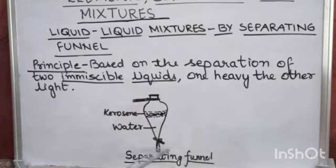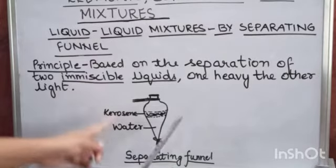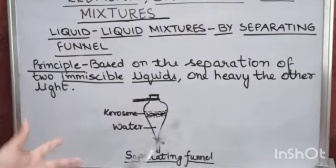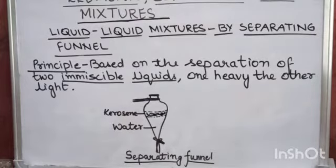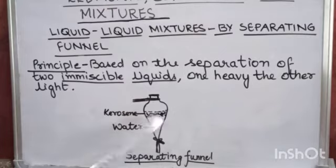Here there is a separating funnel used in this process. The separating funnel is pear-shaped, or you can say a cylindrical bulb, with a stop cork fitted at the end. The immiscible liquids are allowed to stand in the separating funnel. The mixture is poured in, and the one which is heavy will settle down.